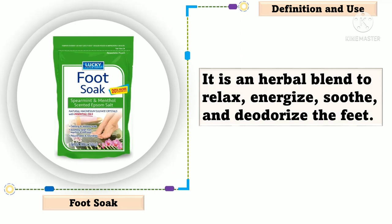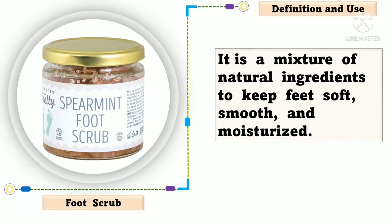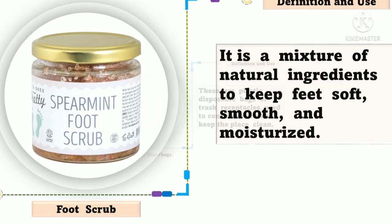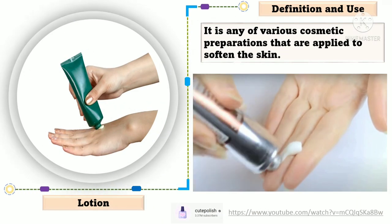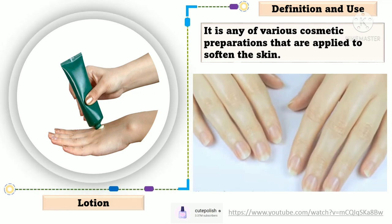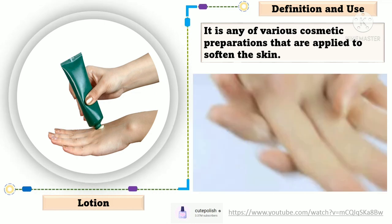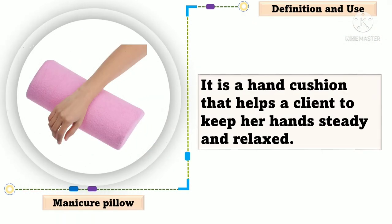Foot soak is an herbal blend used to relax, energize, soothe, and deodorize the feet. Foot scrub is a mixture of natural ingredients used to keep feet soft, smooth, and moisturized. Garbage bins or bags are plastic disposable bags or trash receptacles used to contain rubbish to keep the place clean. Lotion is any of various cosmetic preparations that are applied to soften the skin. Manicure pillow is a hand cushion that helps a client to keep her hands steady and relaxed.